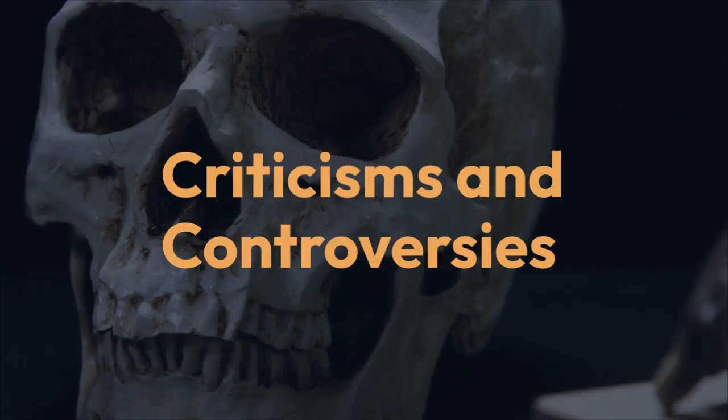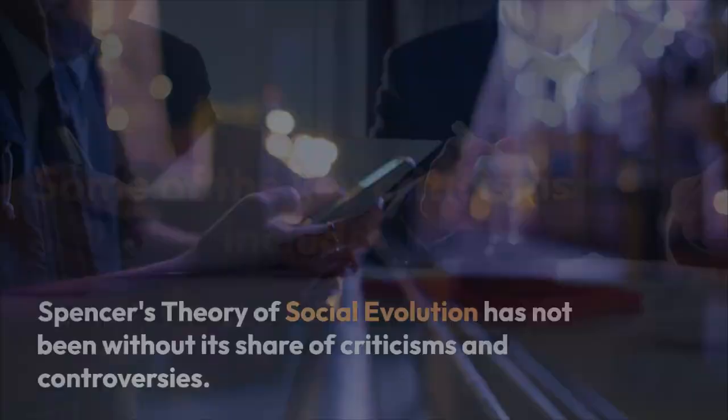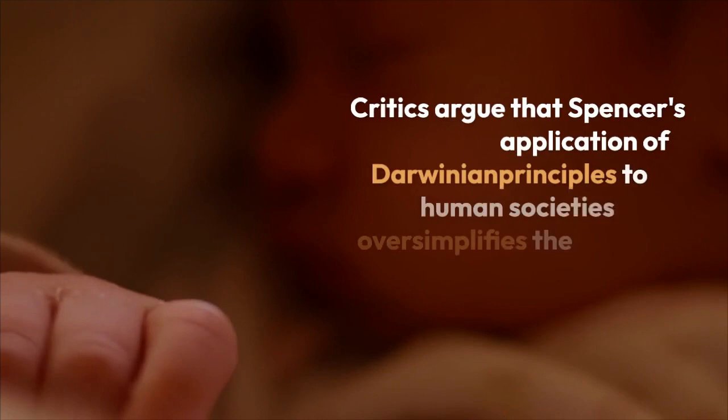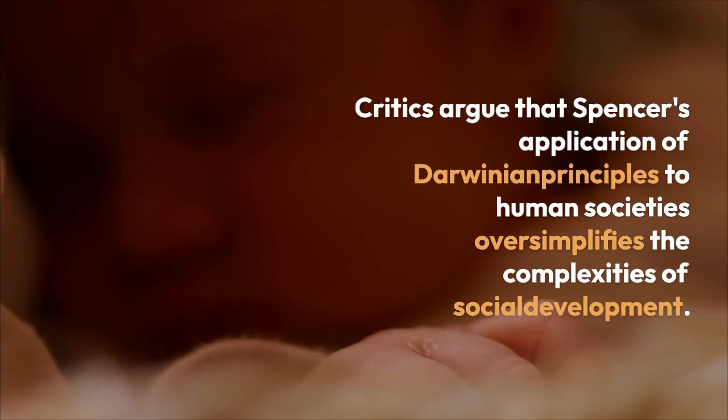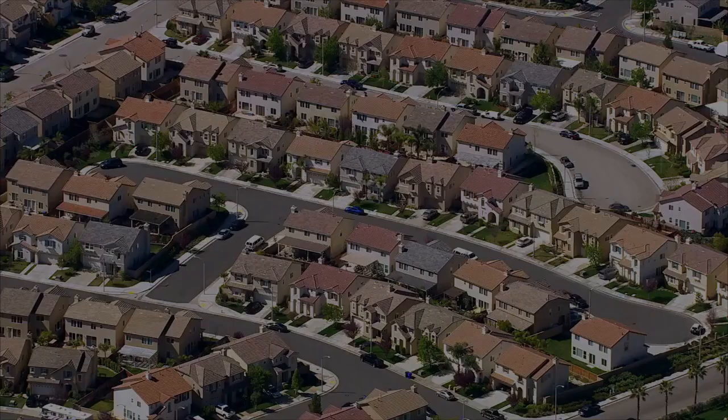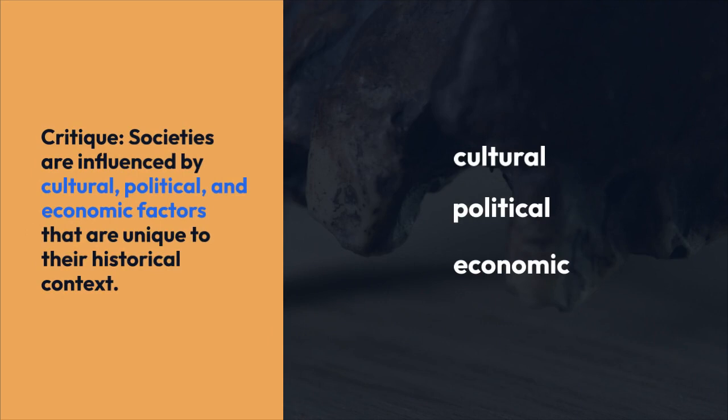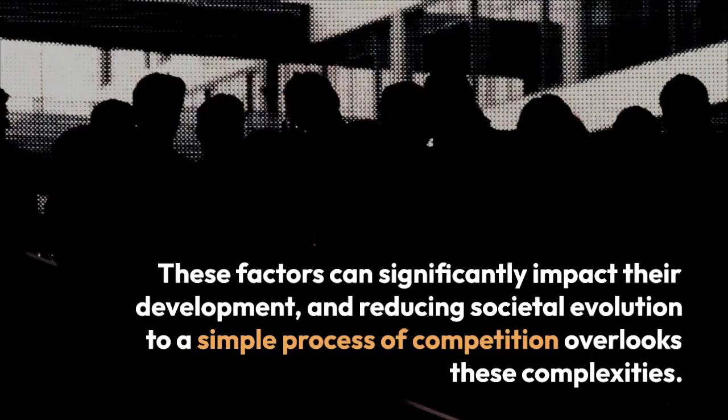Criticisms and Controversies — Simplistic View: Spencer's theory of social evolution has not been without its share of criticisms. Critics argue that Spencer's application of Darwinian principles to human societies oversimplifies the complexities of social development. Human societies are influenced by a multitude of factors, including culture, politics, economics, and technology, which cannot be fully explained by the notion of survival of the fittest. Societies are shaped by cultural, political, and economic factors unique to their historical context, and reducing societal evolution to a simple process of competition overlooks these complexities.